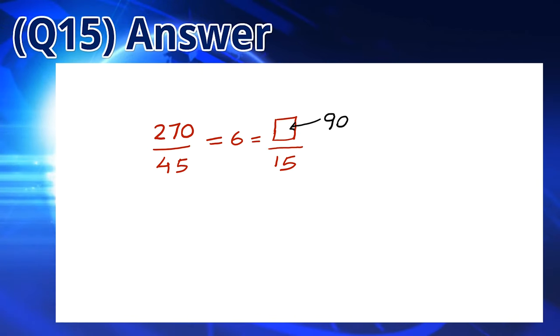270 divided by 45 is 6. We can multiply 15 by 6 which is a product of 90. This gives us the top number, so the answer is D.